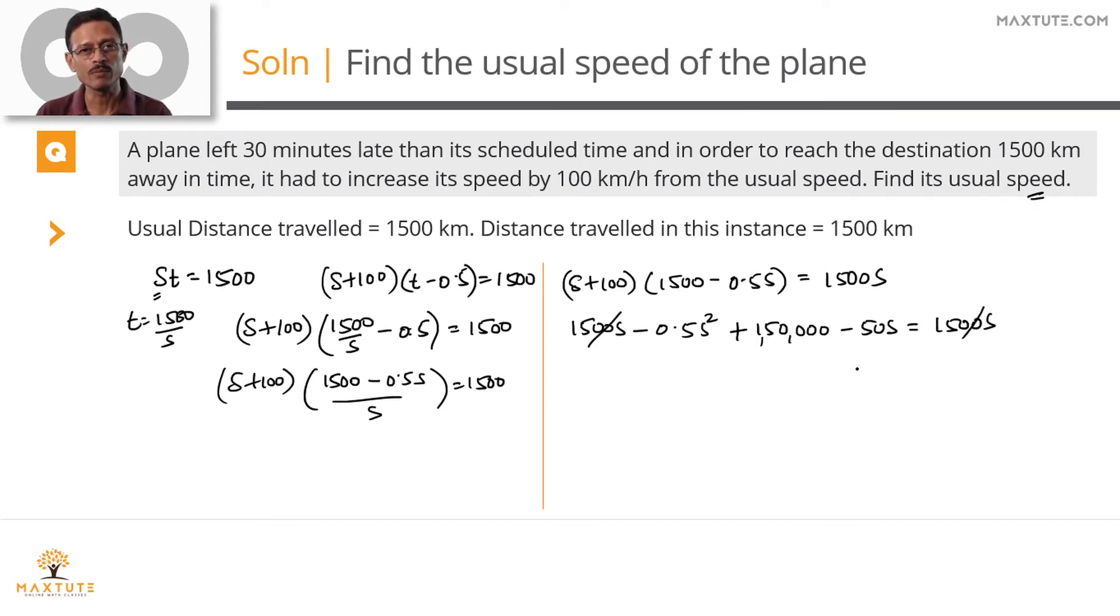Divide this entire equation by minus 0.5. So it leaves us with s square. Minus 0.5 when it divides 1500, you're going to get minus 30000. Minus 50 divided by minus 0.5 will be plus 100. So plus 100 s. This equals 0.